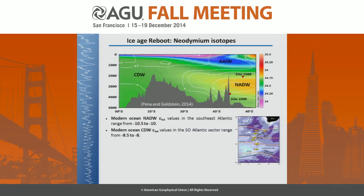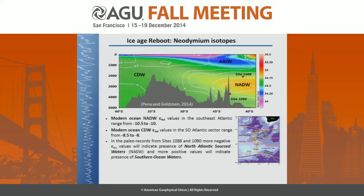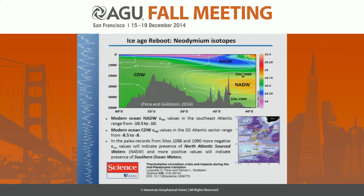What we see in the GEOTRACES section is epsilon-neodymium at the top and salinity at the bottom. We have a negative tongue of NADW moving south with values around minus 12, and Antarctic Intermediate Water and Antarctic Bottom Water moving north with more radiogenic values. Going back to the Cape Basin sites, we concentrated on site 1088 on top of the modern NADW core and the deeper site 1090. The modern epsilon-neodymium values range from minus 10 to minus 10.5 for the NADW, and minus 8 to minus 8.5 in the circumpolar deep water.